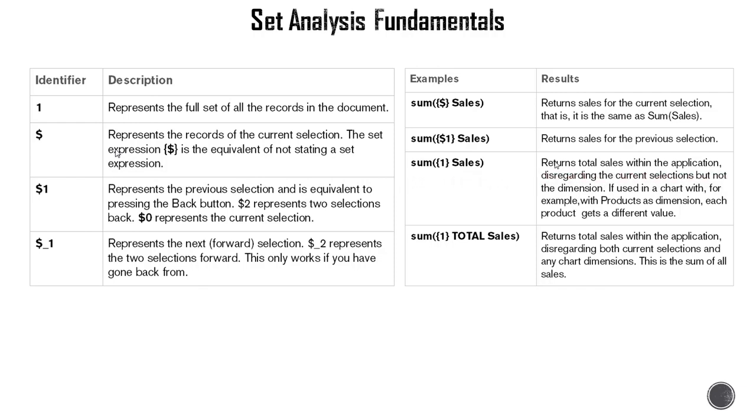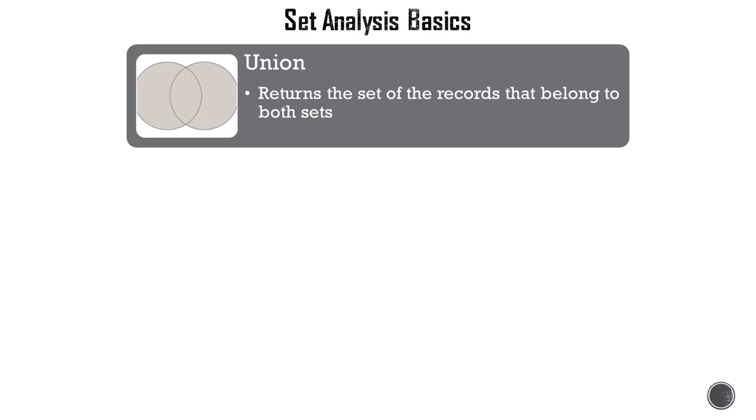And then you can go further and add a TOTAL qualifier. So 1 ignores user selections, and TOTAL will ignore chart dimensions. So you have a chart with a set of dimensions and then users are making selections. If you want to ignore both user selections as well as chart dimensions, then you combine 1 as an identifier with TOTAL as a qualifier, as shown in the bottom expression on top right.